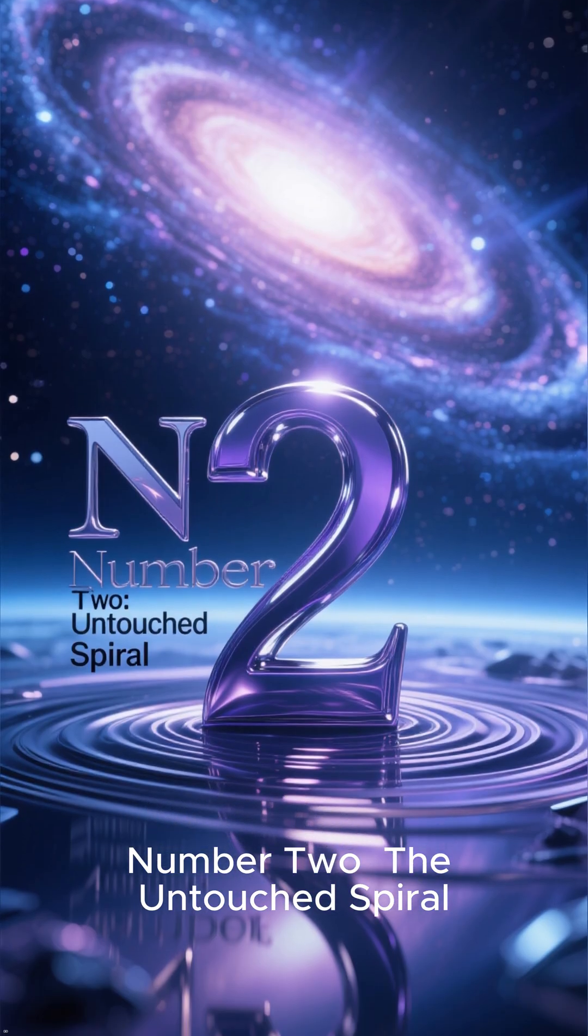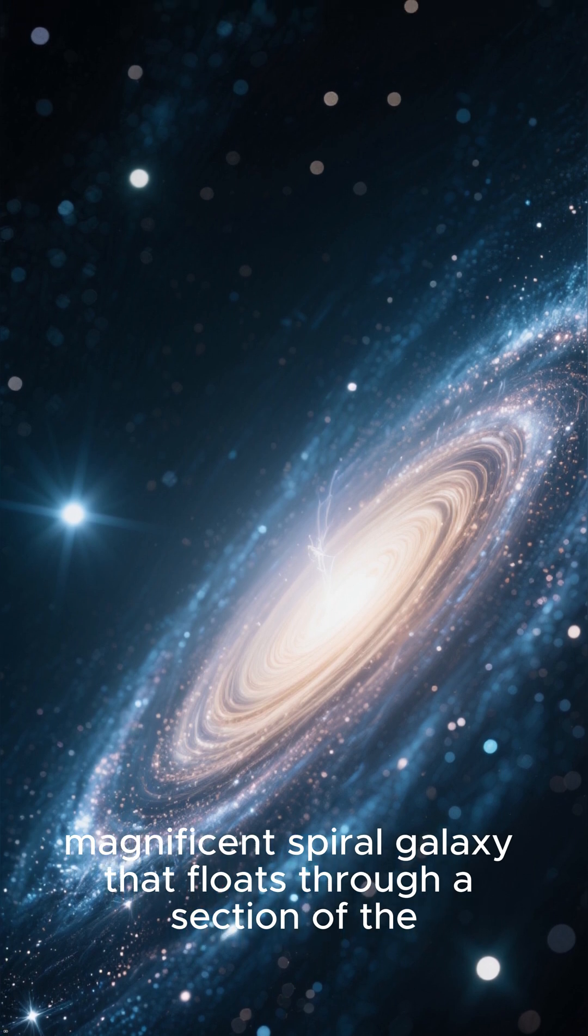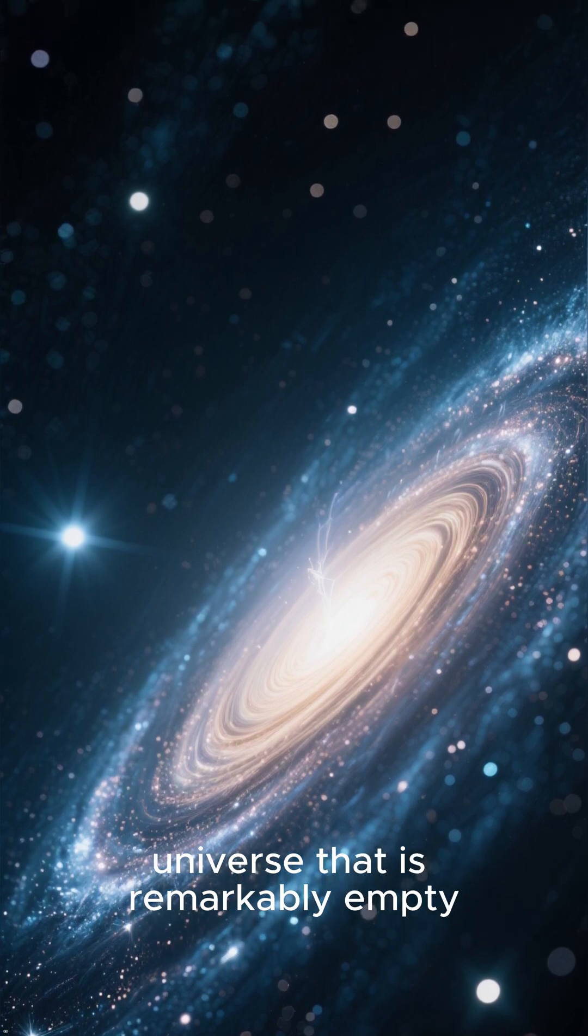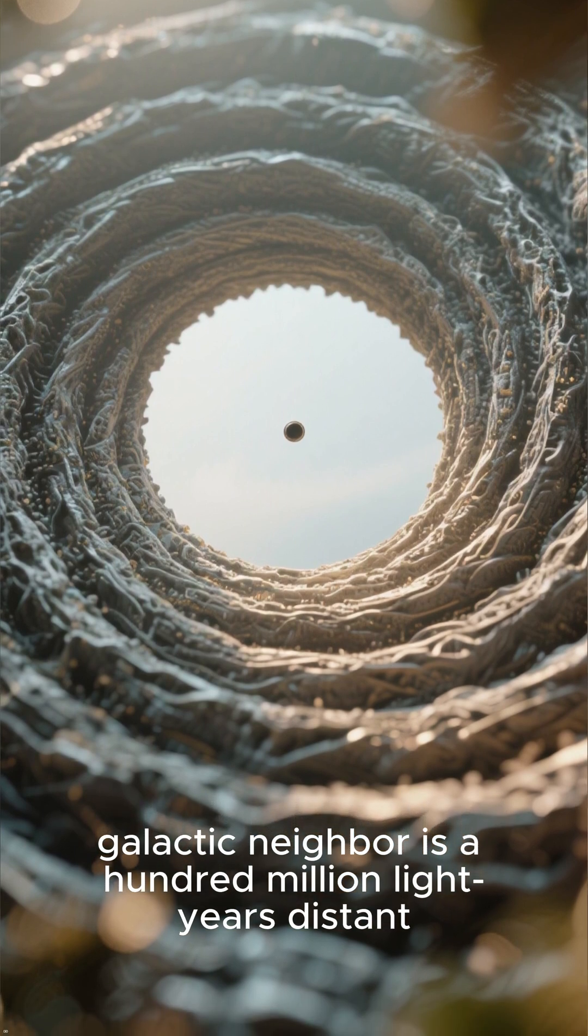Number 2. The Untouched Spiral. Our penultimate contender is a truly magnificent spiral galaxy that floats through a section of the universe that is remarkably empty. Its isolation is such that its nearest large galactic neighbor is a hundred million light years distant.